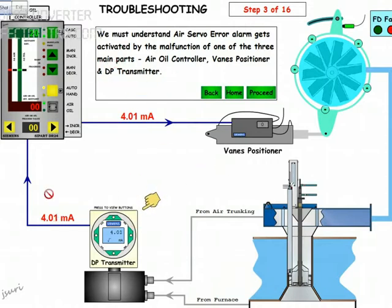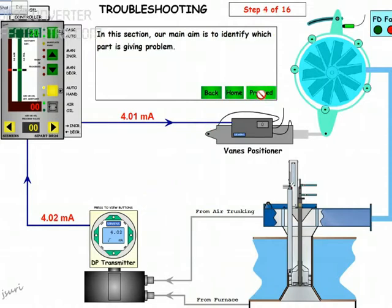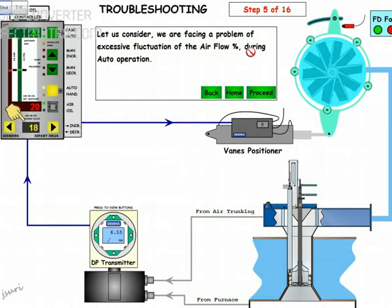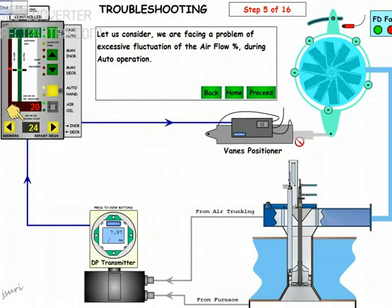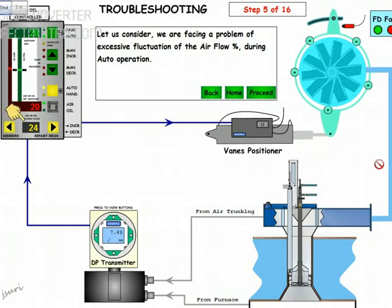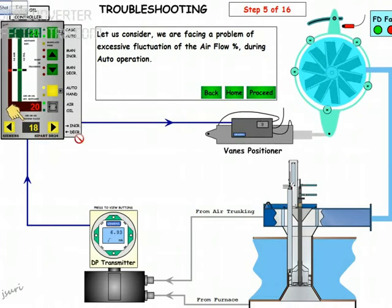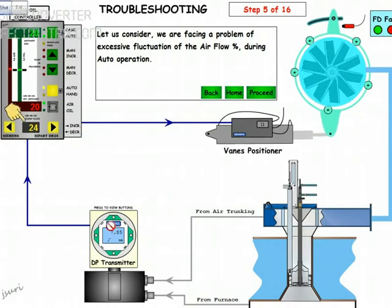Our aim is to identify which part is giving us the problem. We are facing a problem of fluctuation of air flow during auto operation. The fan is running and you can see the vane positioner fluctuating. At the same time the air oil controller is also fluctuating. All three are fluctuating and we have to identify which is the problem.